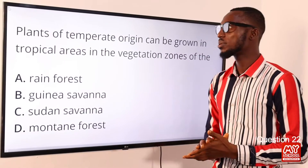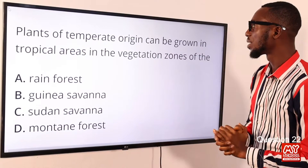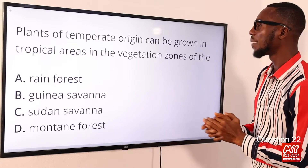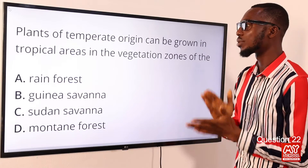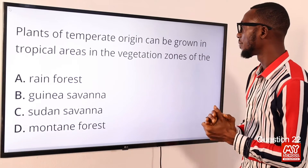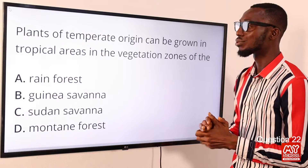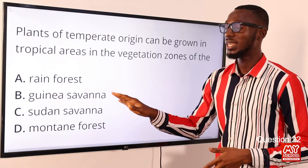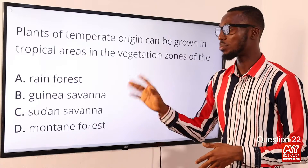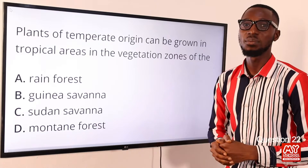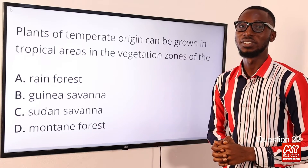Question 22. Plants of temperate origin can be grown in tropical areas in the vegetation zones of the highlands, and option B is the answer.